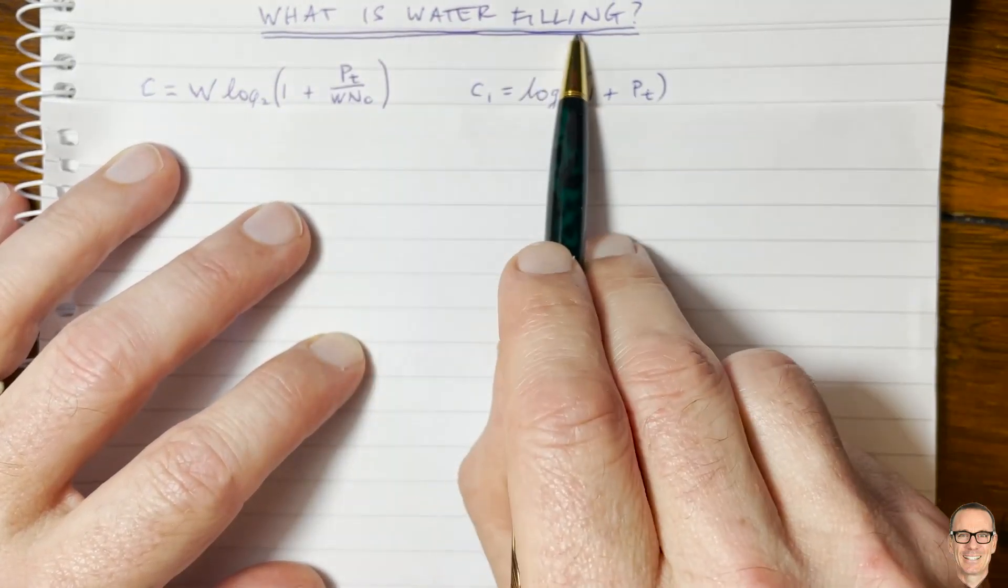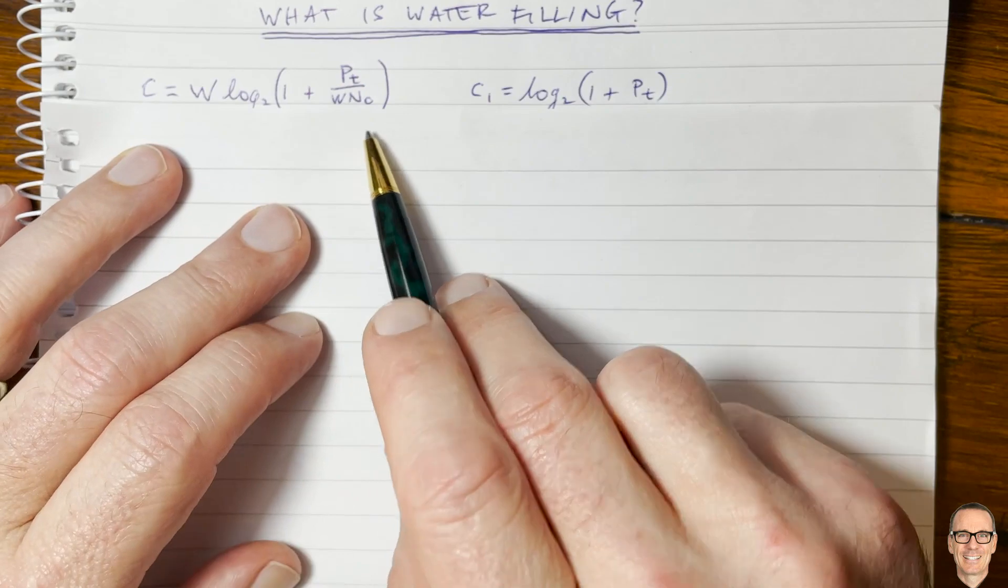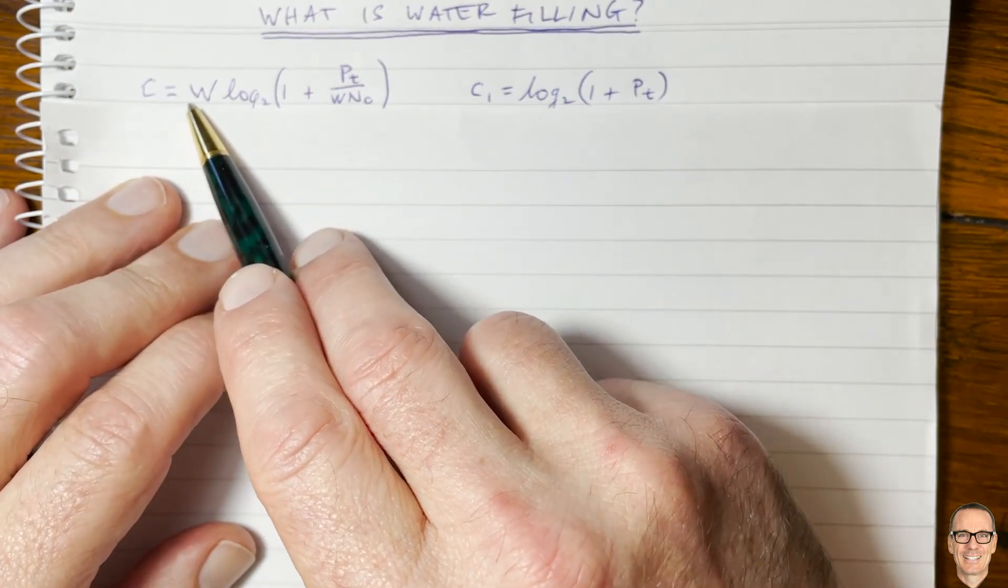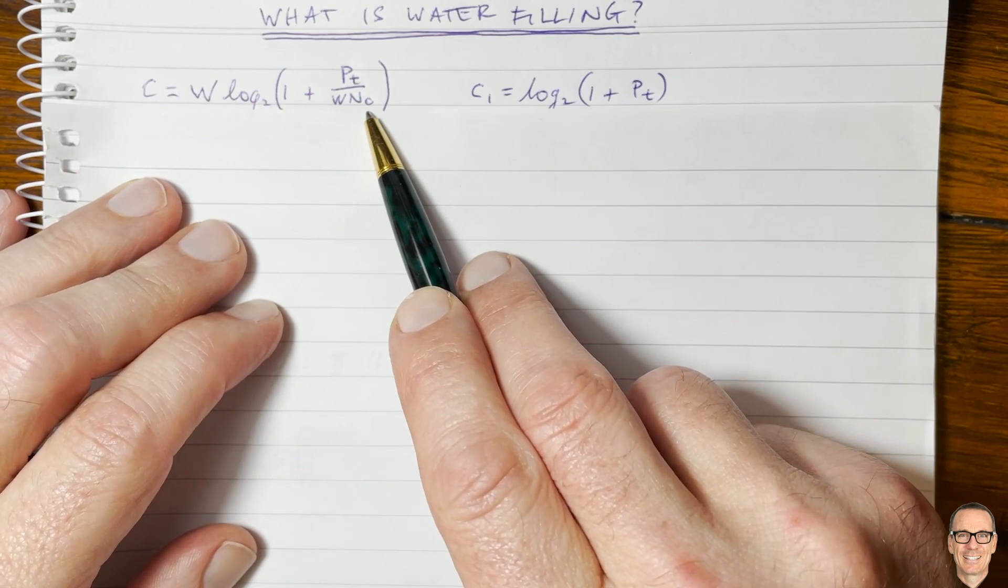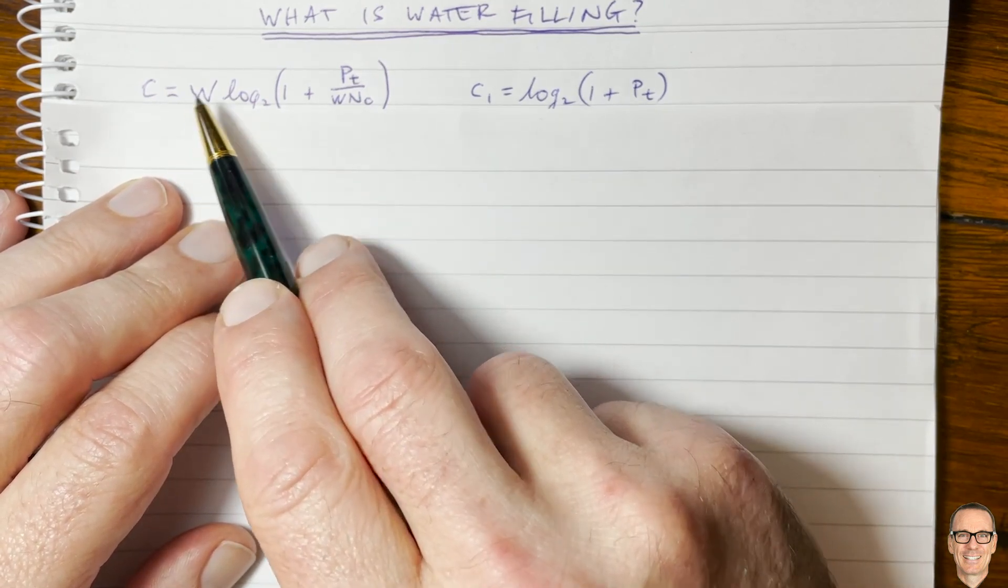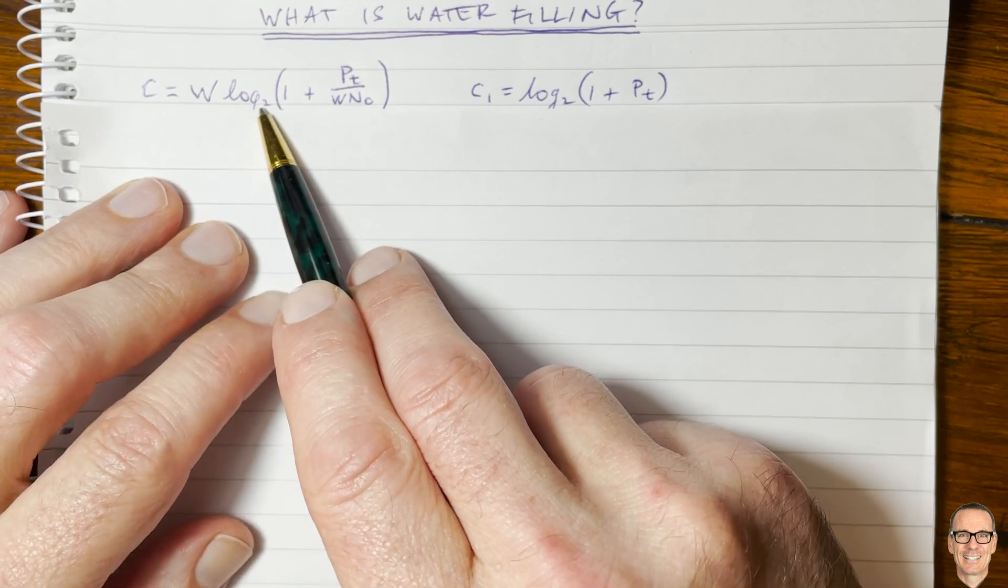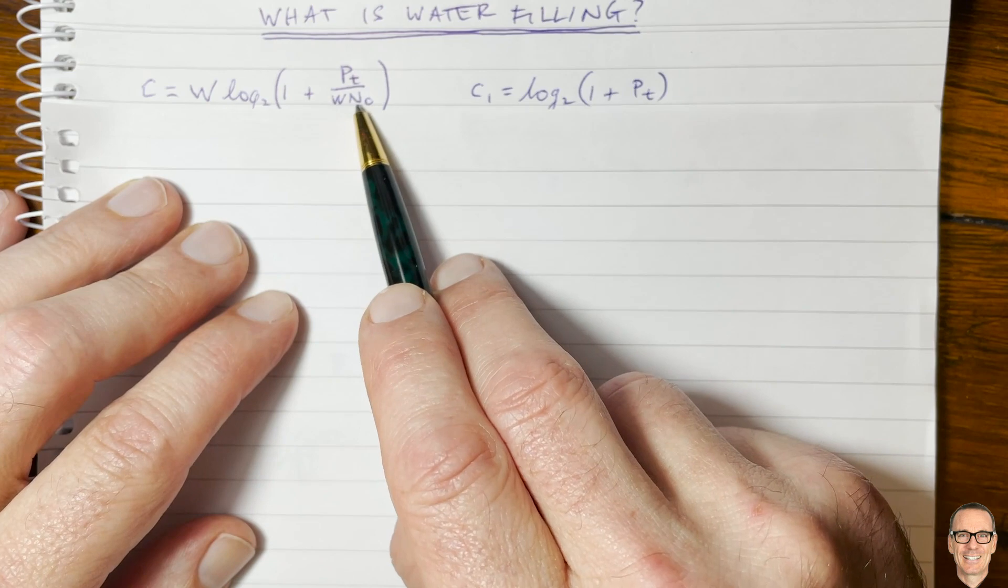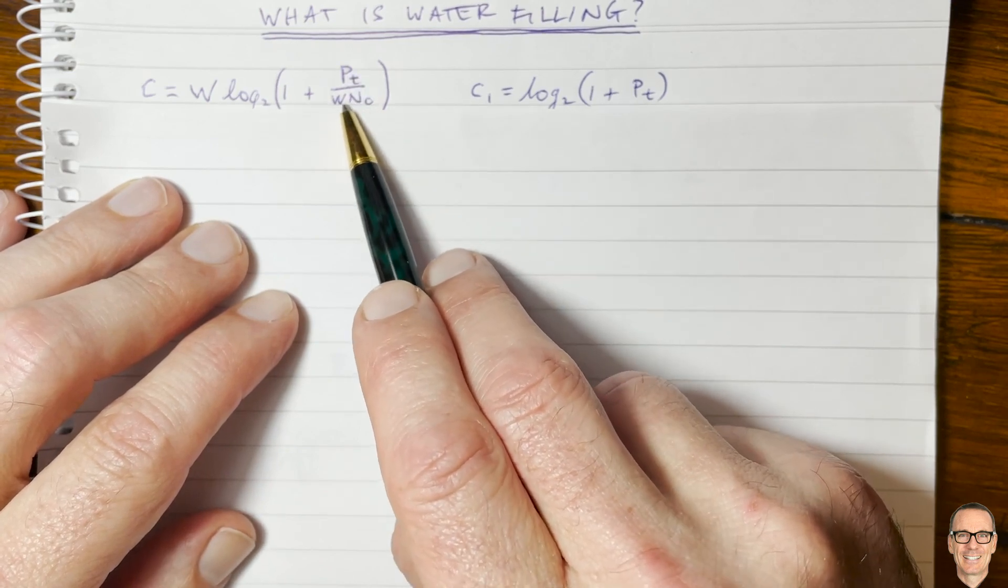So what is water filling in communications? Let's start with the additive white Gaussian noise channel, and this is the equation for the capacity. The capacity equals the bandwidth times log to the base 2, we measure in bits, of 1 plus the signal to noise ratio, the power divided by the noise.